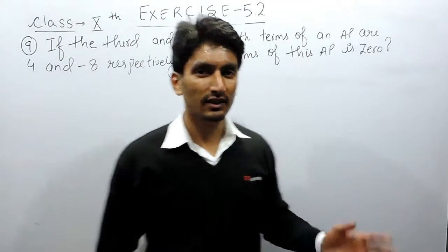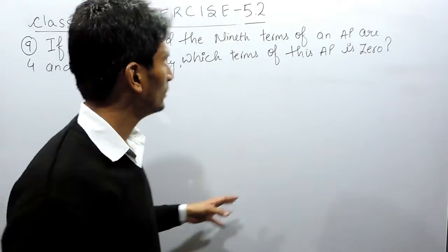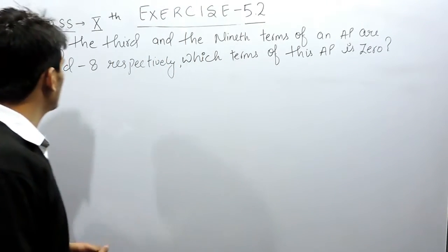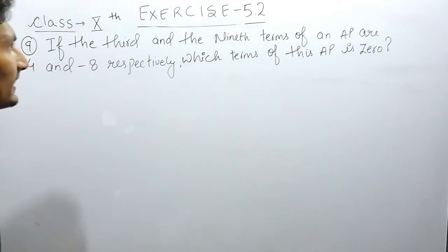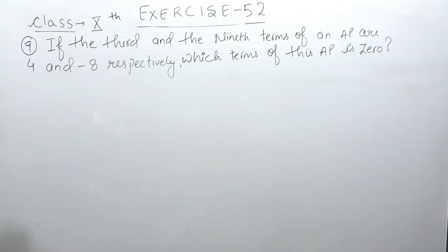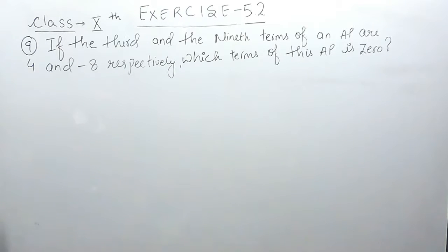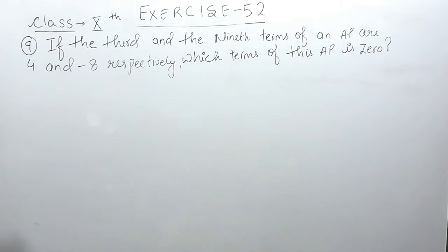Hello everyone. In this video we are going to solve question number 9 of exercise 5.2. The question says: if the third and the ninth term of an AP are 4 and minus 8 respectively, which term of this AP is 0?